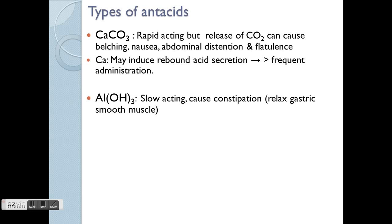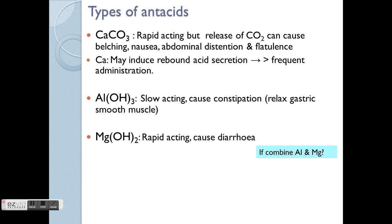The newer options include aluminium hydroxide and magnesium hydroxide. Aluminium hydroxide has a slow-acting neutralising effect but causes constipation by relaxing the gastric smooth muscles. Magnesium hydroxide, on the other hand, is rapid-acting but causes diarrhoea — the opposing effect. Therefore, combining both aluminium hydroxide and magnesium hydroxide in one preparation balances the side effects and provides both fast-onset and longer-lasting antacid action.